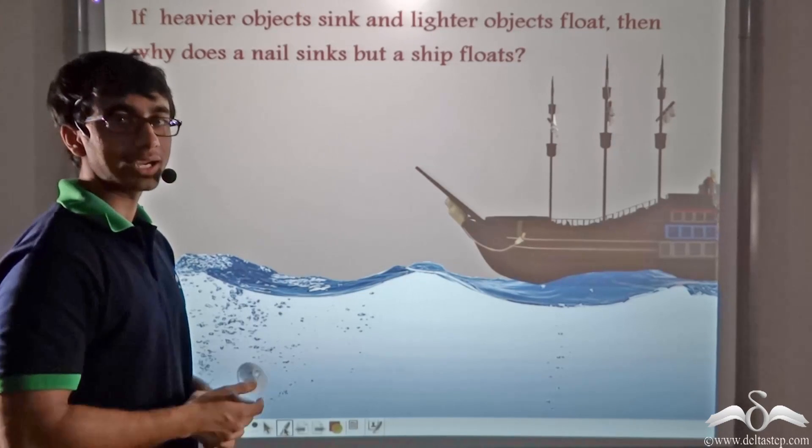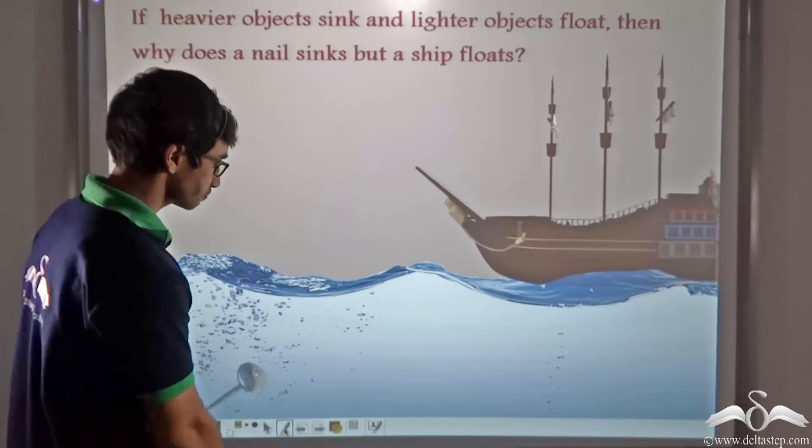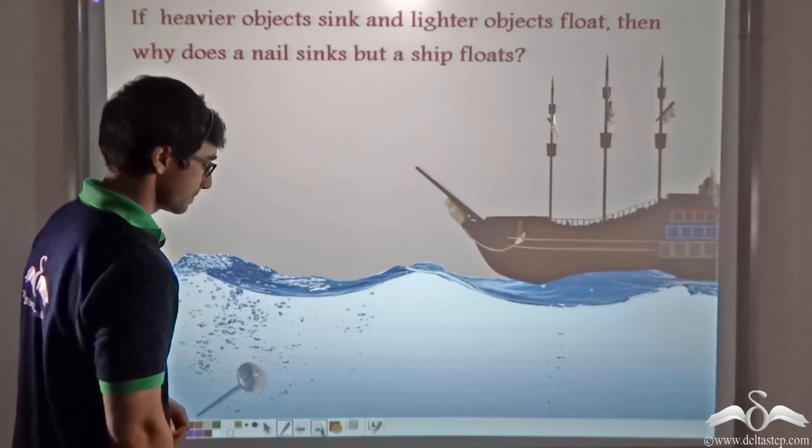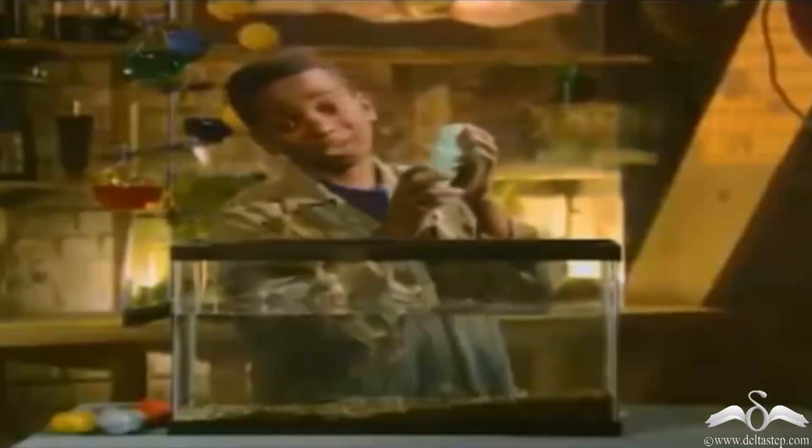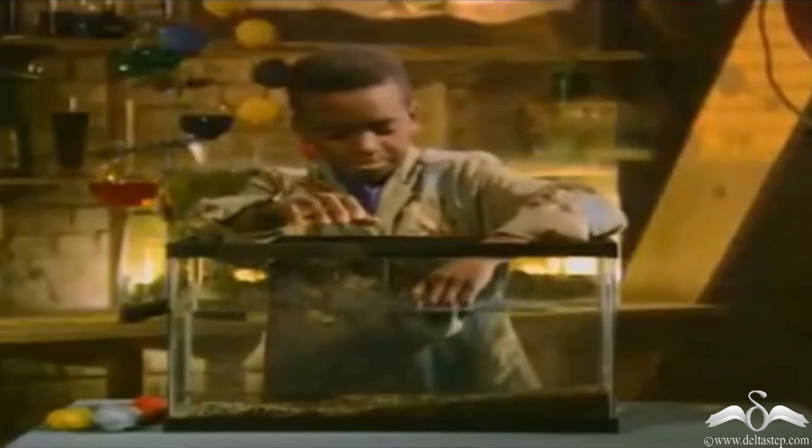But first we are going to look at a very interesting video. In this video you will find that plasticine dough is taken and molded into a flat-shaped structure. As you can see, this plasticine dough is floating. Now observe what happens when the same plasticine dough without any addition is curled up into a ball — and then it sinks.